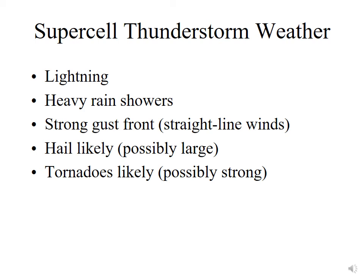The types of weather associated with supercell thunderstorms include lightning, very heavy rain showers, a very strong gust front, and hail that is likely and possibly large — things the size of golf balls, tennis balls, baseballs, or possibly even softballs. Tornadoes are likely with a supercell thunderstorm, and those tornadoes have the potential to be very strong, very damaging, and very deadly.